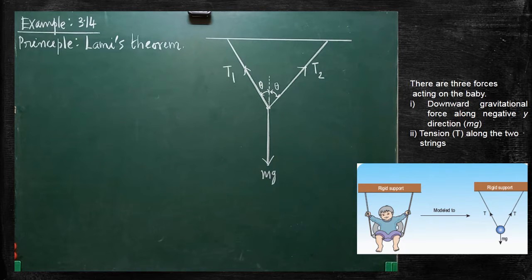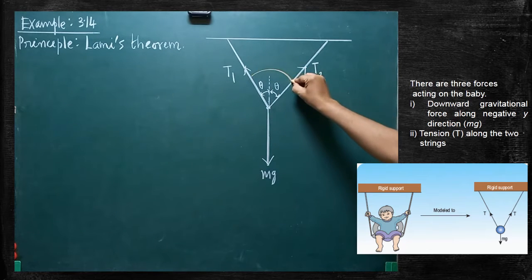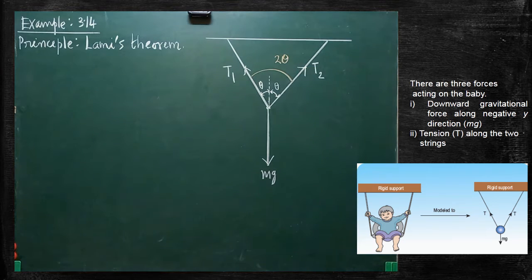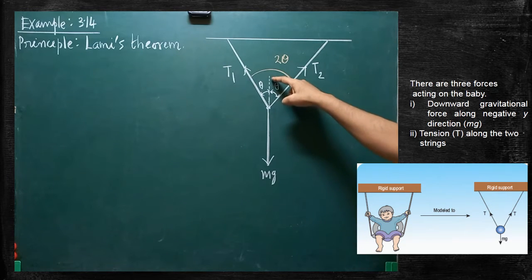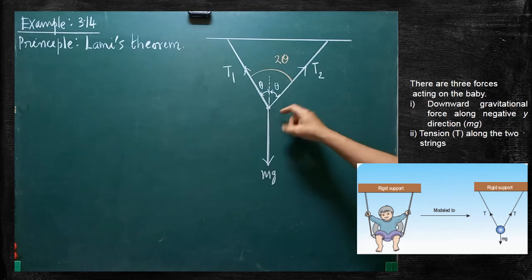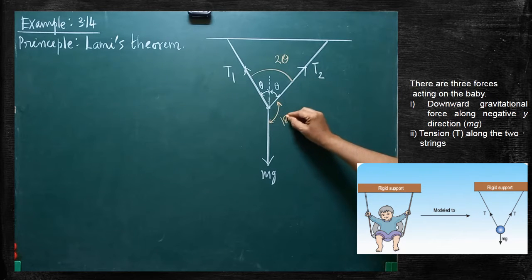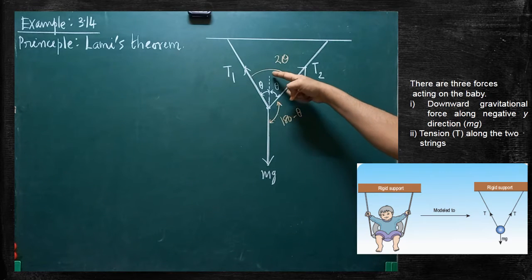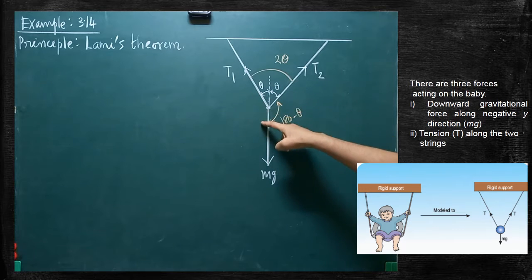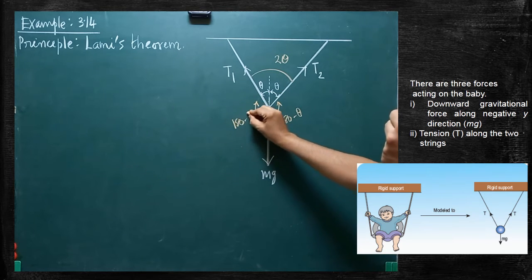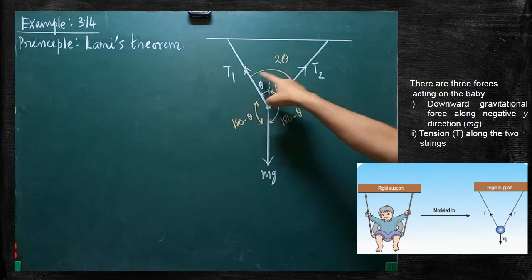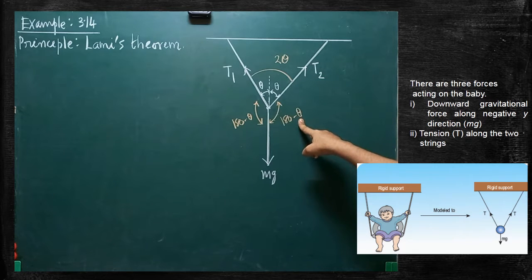Now we will measure the angles. The total angle between T1 and T2 can be taken as 2 theta. With reference to the dotted line, this angle is theta. The total angle with respect to the line is 180, so 180 minus theta gives this angle. Therefore, the angle between T2 and Mg is 180 minus theta, and the angle between T1 and Mg is also 180 minus theta. Now we know all the angles.